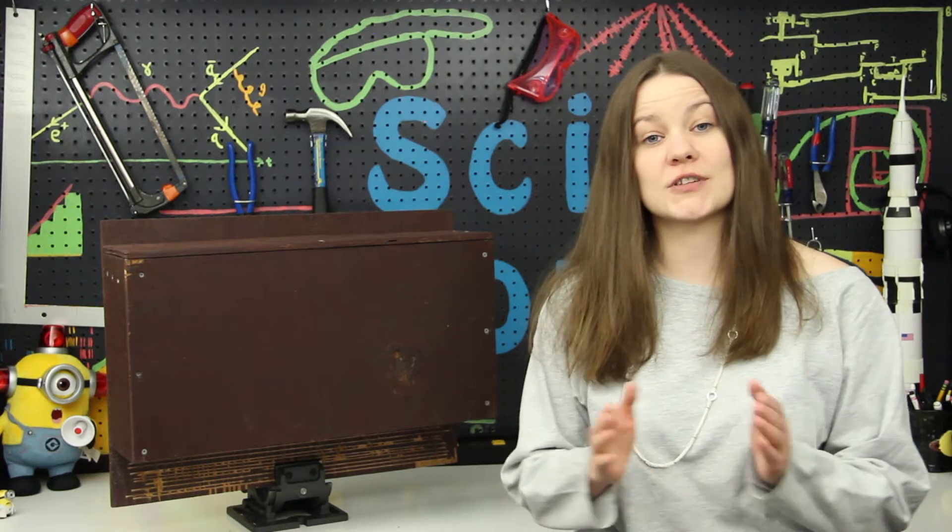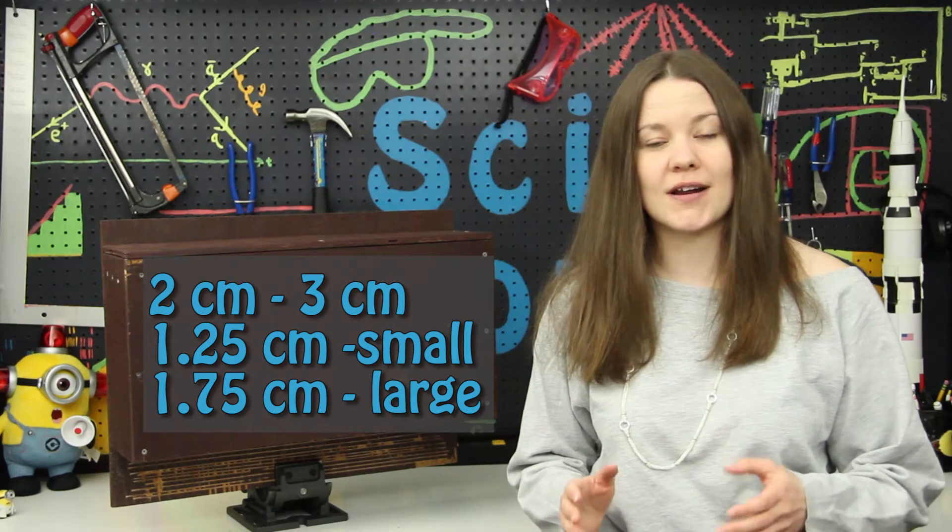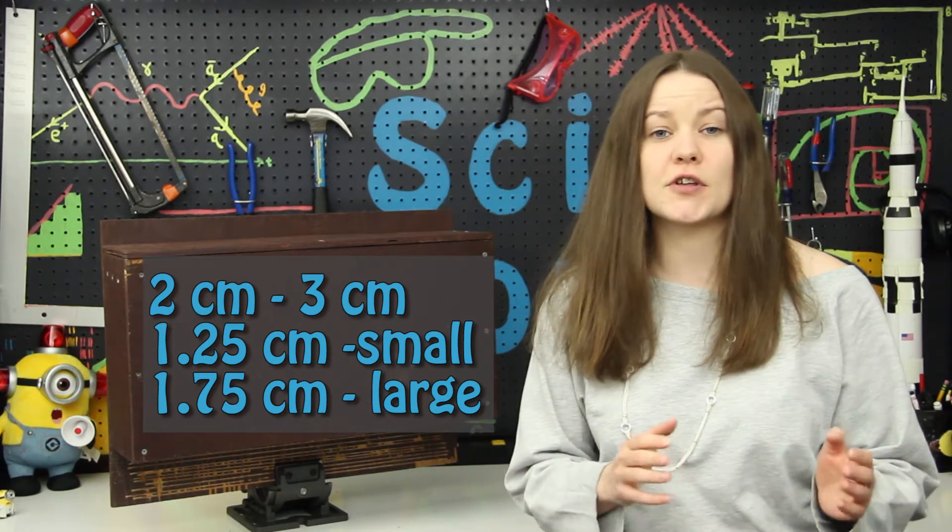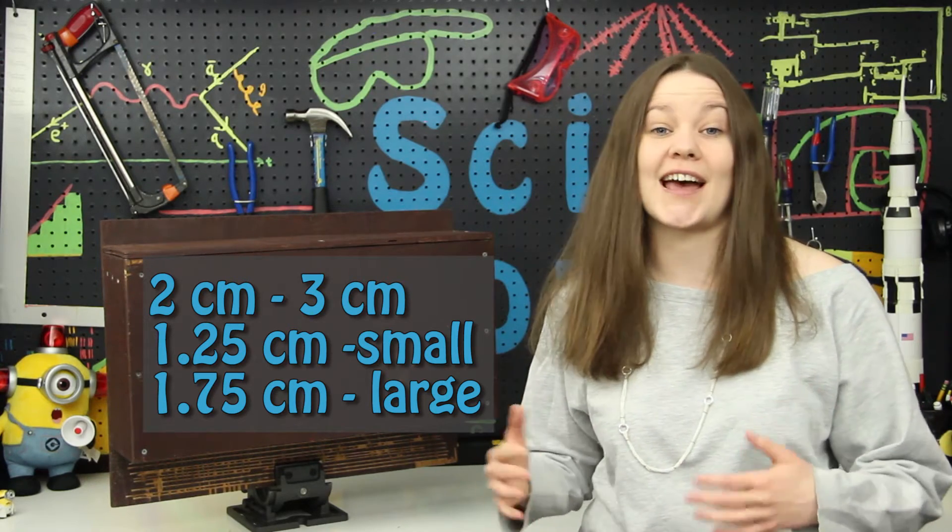Mothers feel safest when they put their young in tight spaces, so you're going to want your baffles to be spaced three quarters to an inch apart. If you have small bats you can go down to half an inch, and if you're dealing with larger bats you can go up to one and a half inches.